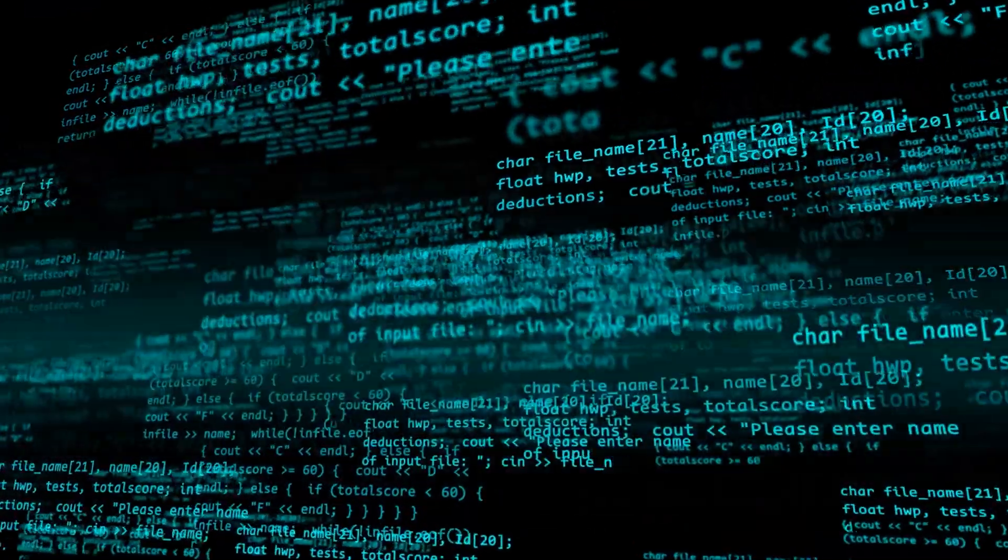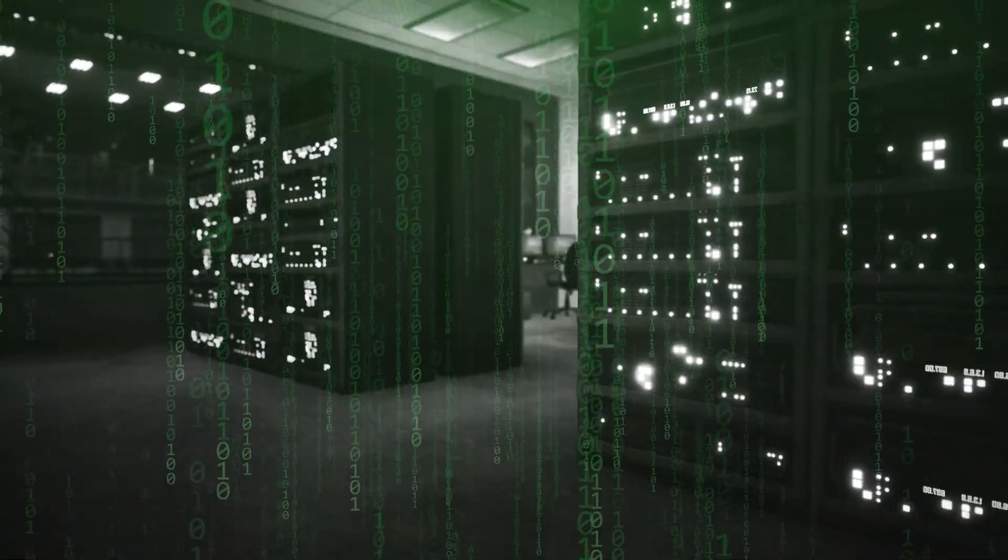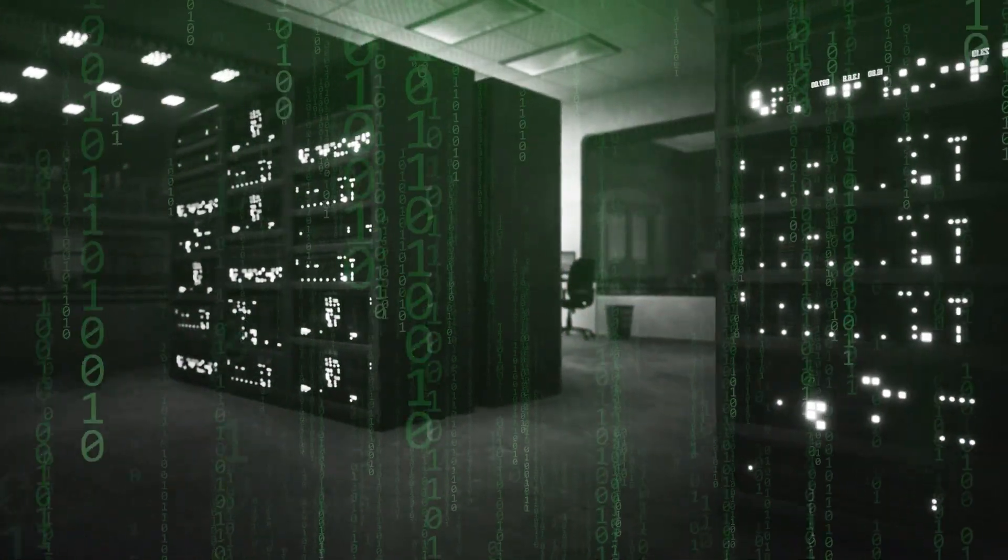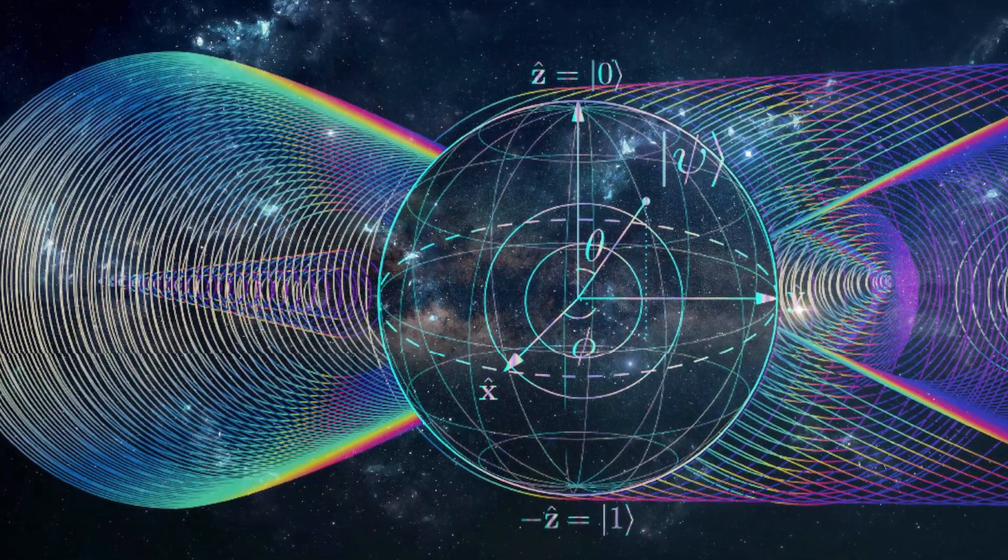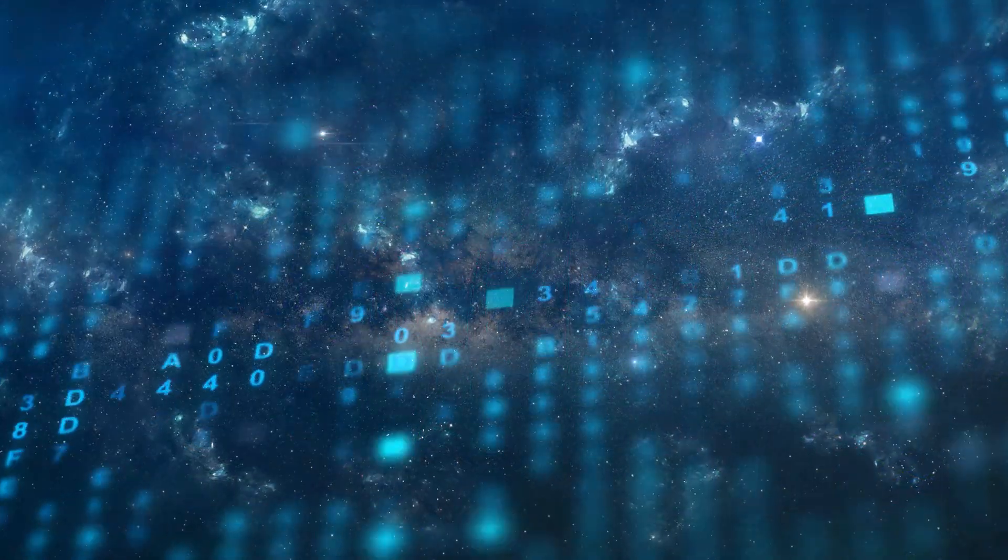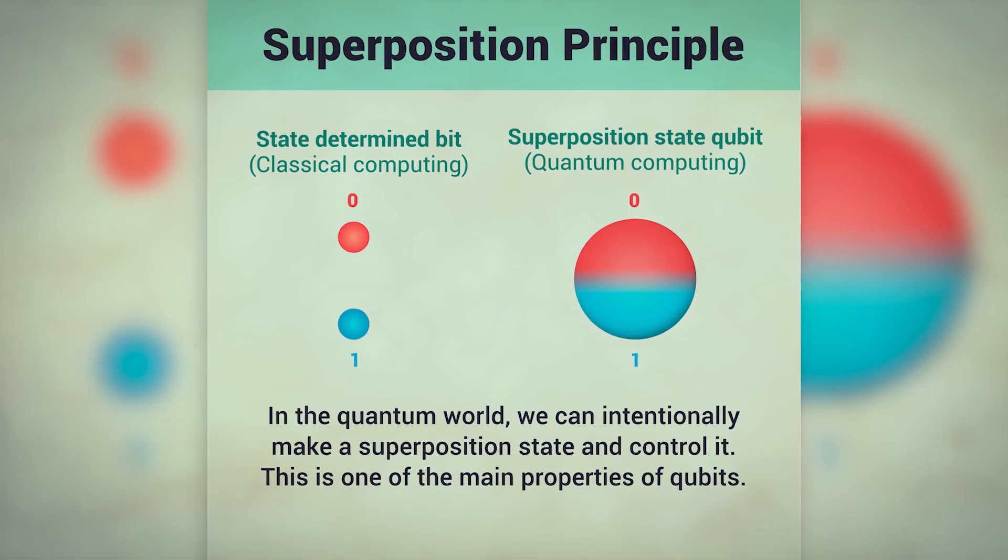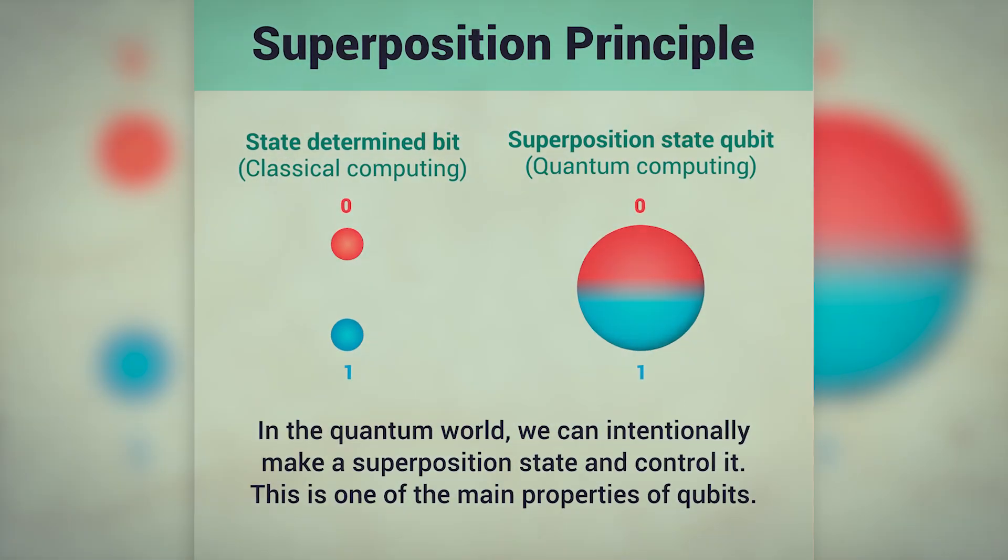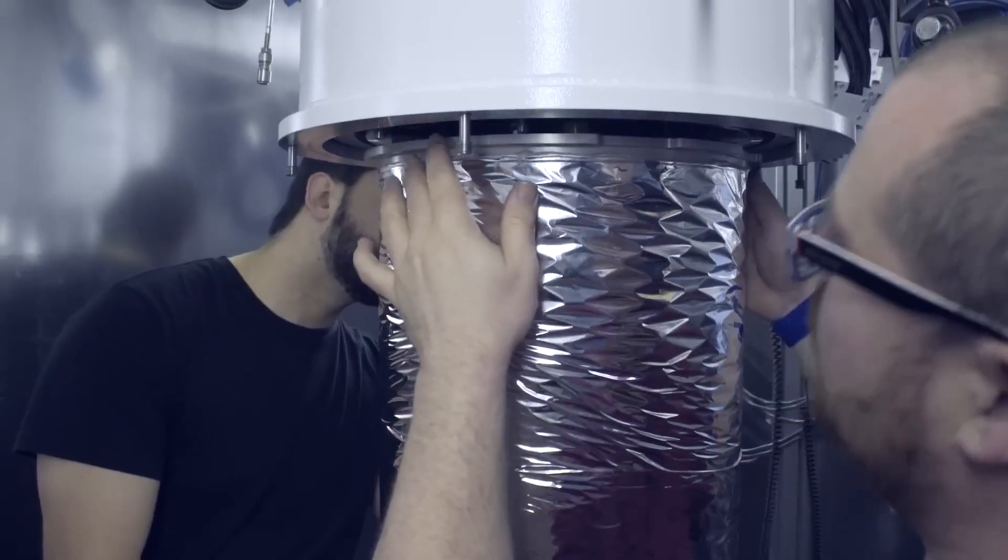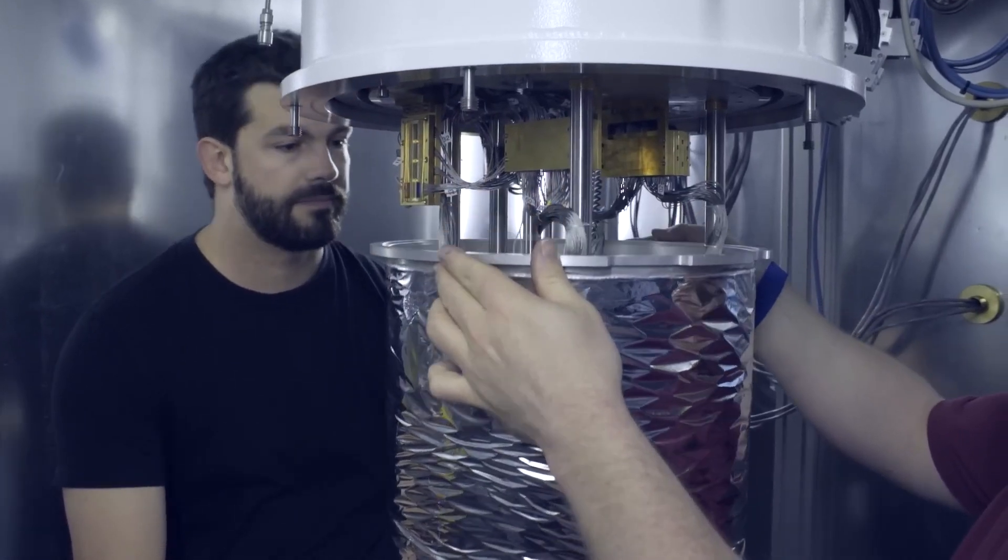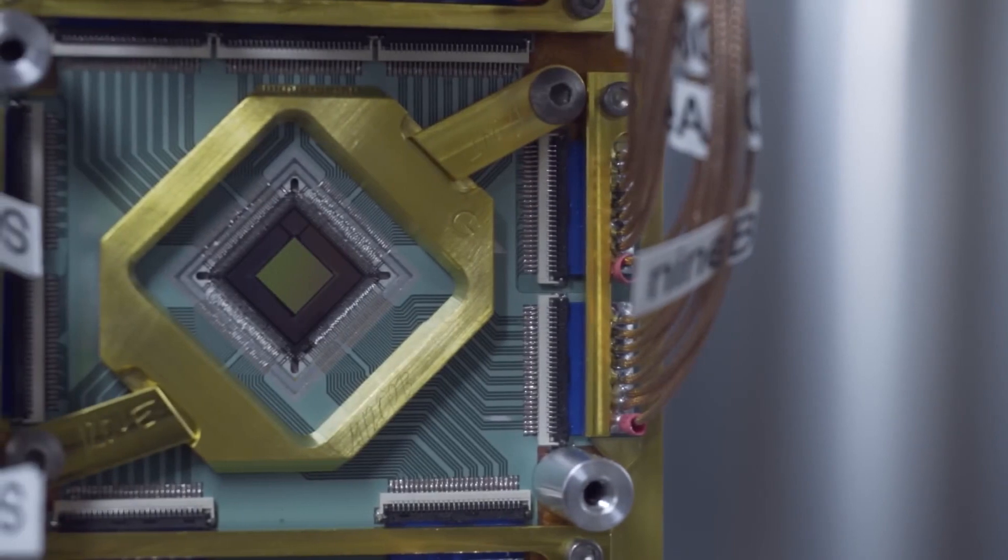Now let's touch upon how data is stored in a quantum computer like Sycamore. Unlike classical computing, where data is stored as either zeros or ones, quantum computing uses qubits. Qubits can exist in a state of zero, one, or both simultaneously, thanks to a principle called superposition. This ability to be in multiple states at once allows for the representation and manipulation of a vast amount of information with a relatively small number of qubits, showcasing the power and potential of quantum computing to revolutionize how we process information in the future.